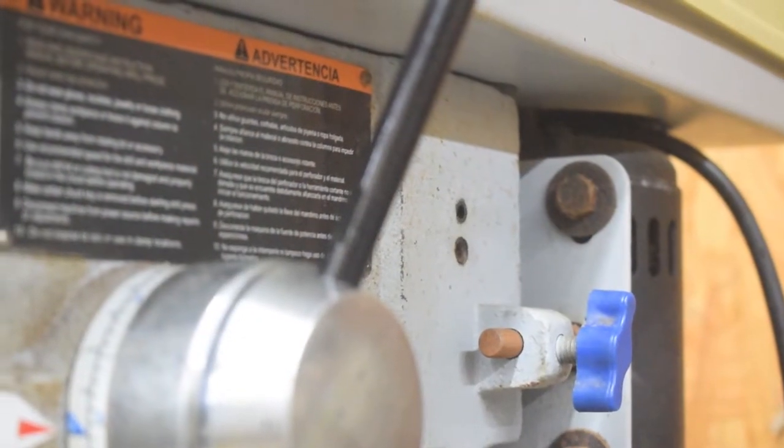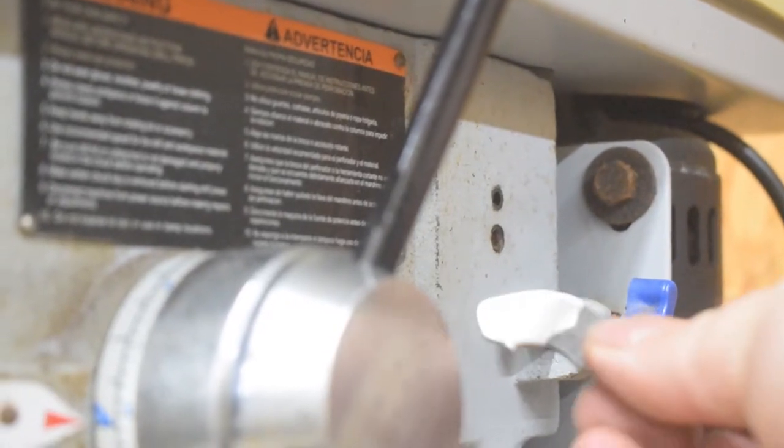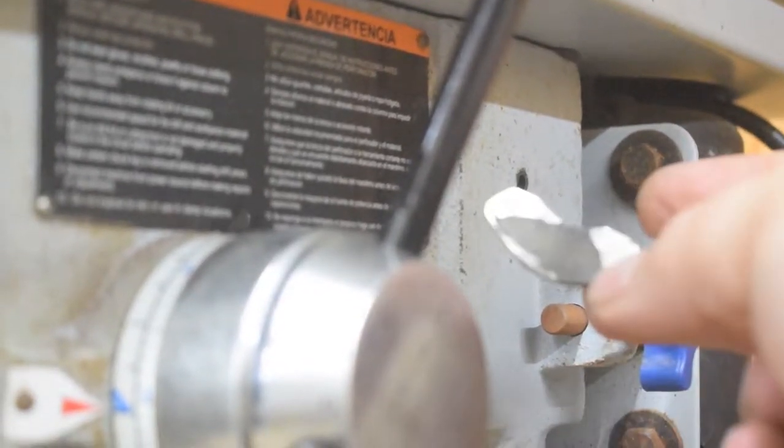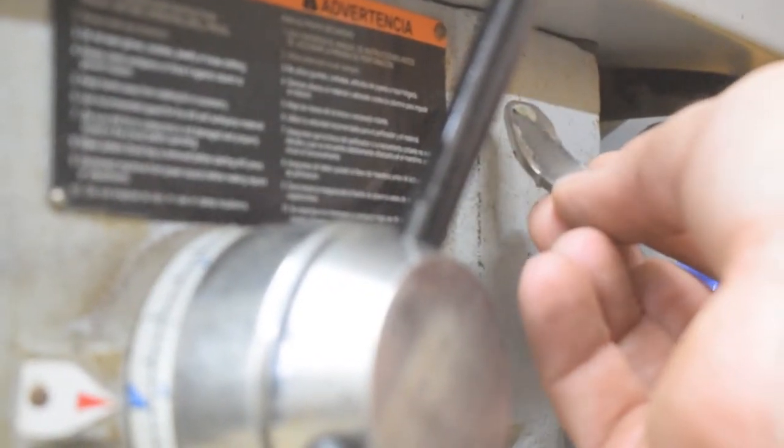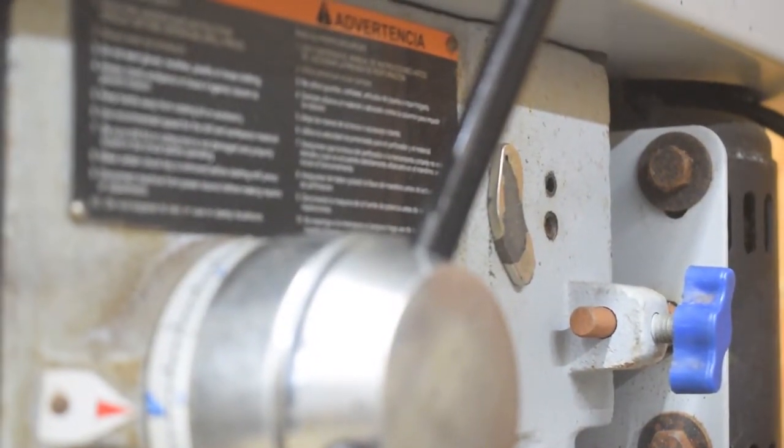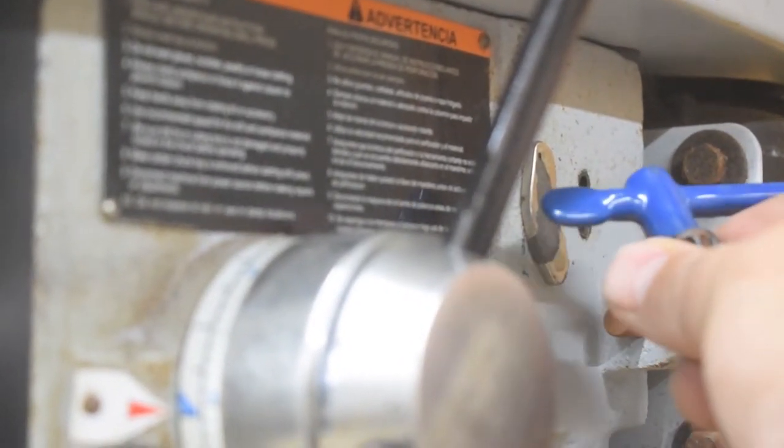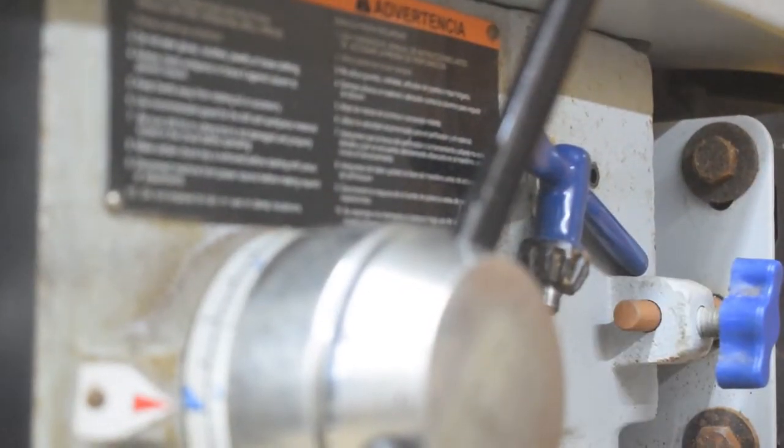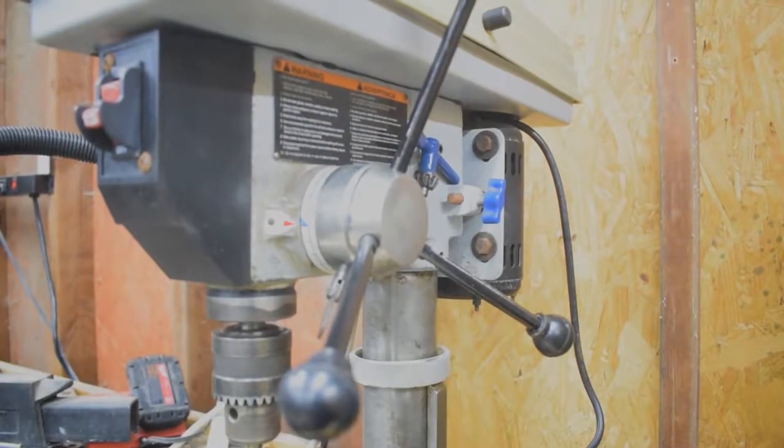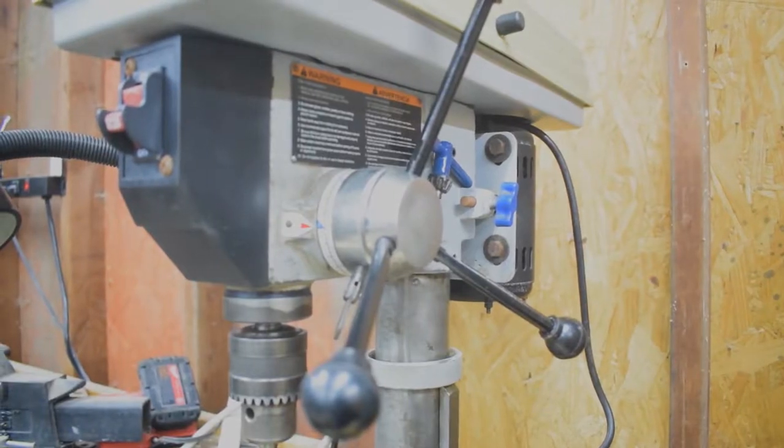Here's a tip for all those who lose their chuck key all the time. This is a neodymium magnet that I pulled out of a hard drive. I'll link to a video where I show you how to do that. I just stick it to the side of the drill press, take my chuck key, boom! And as long as you put it back there every time, you will never again lose your chuck key.